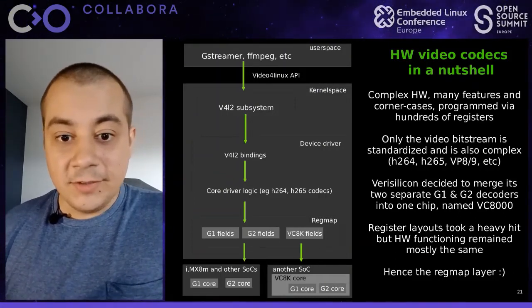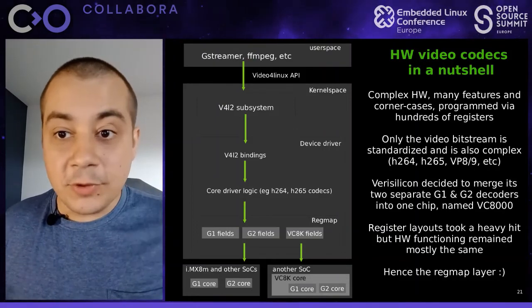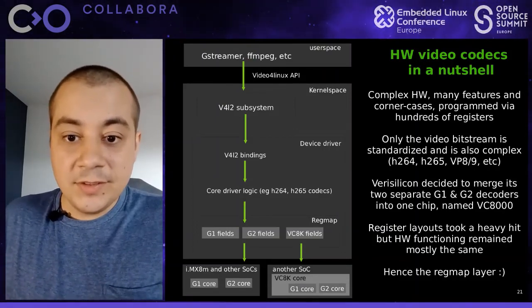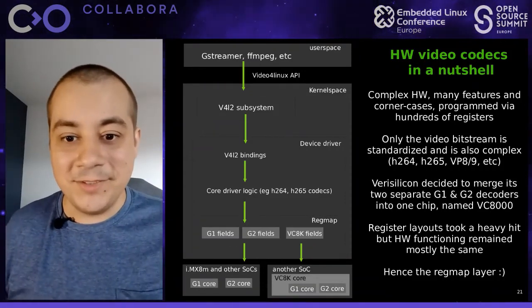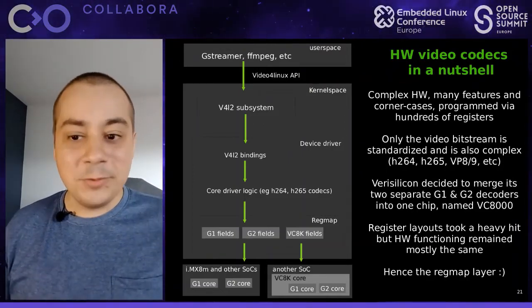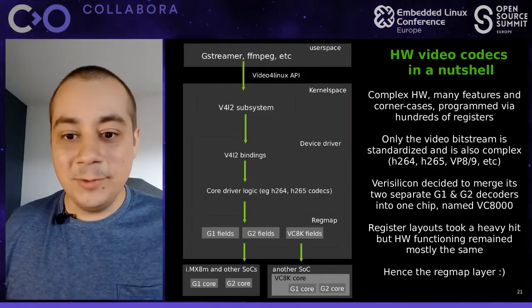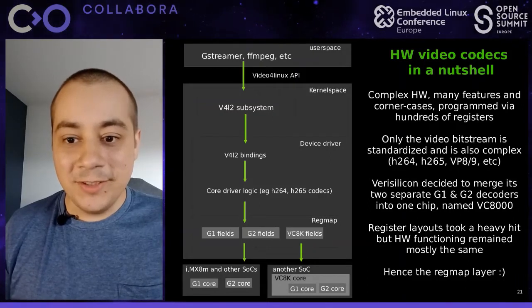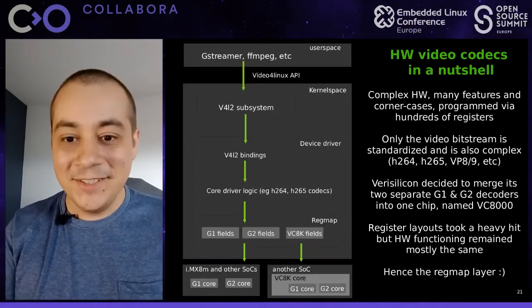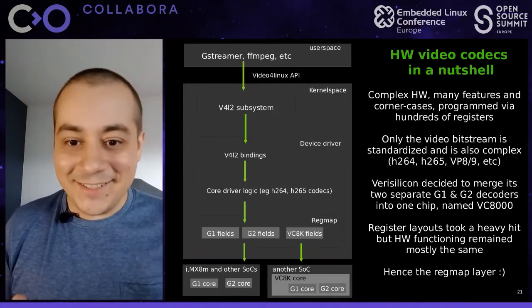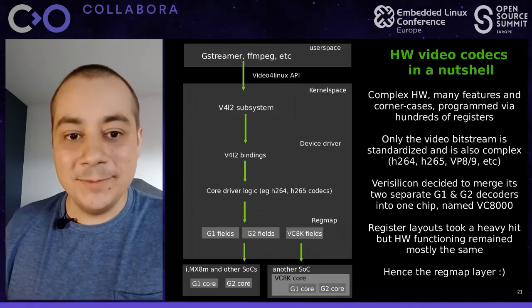Starting with the newer version named VC8000D, the two hardware cores were merged into one. This caused significant problems for the register layout because all the registers were squashed and there were quite non-trivial changes that were hard to detect. For example, to decode H.264 high profile, you needed to program the HEVC — H.265 — registers. We introduced the regmap layer to try to compensate for all of this.